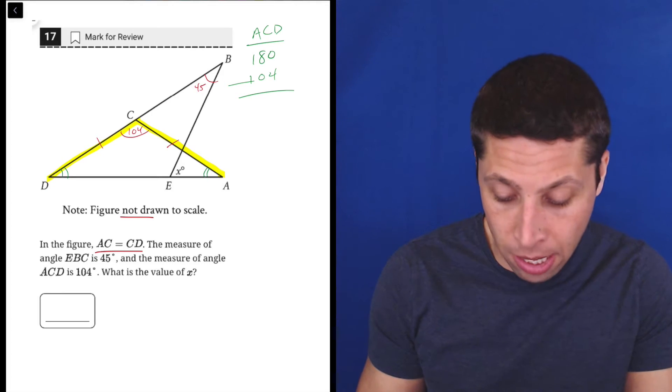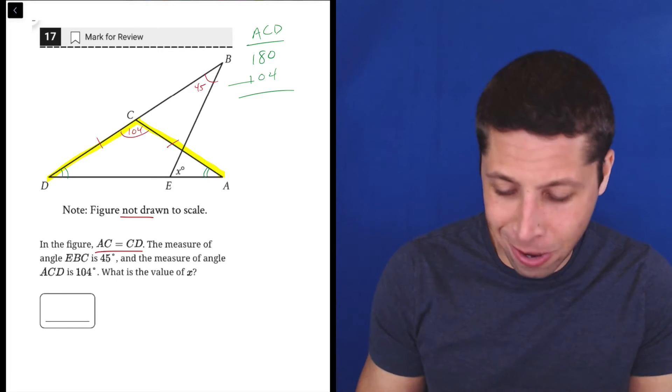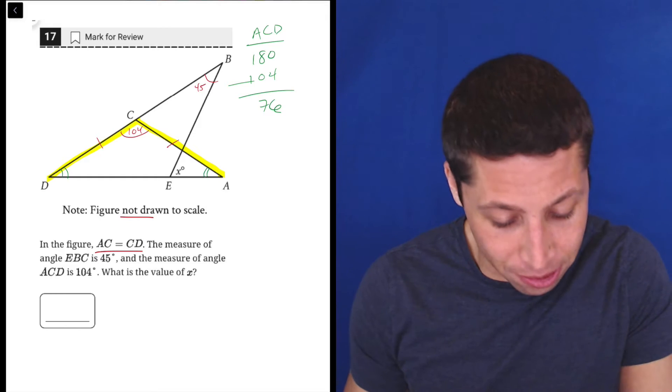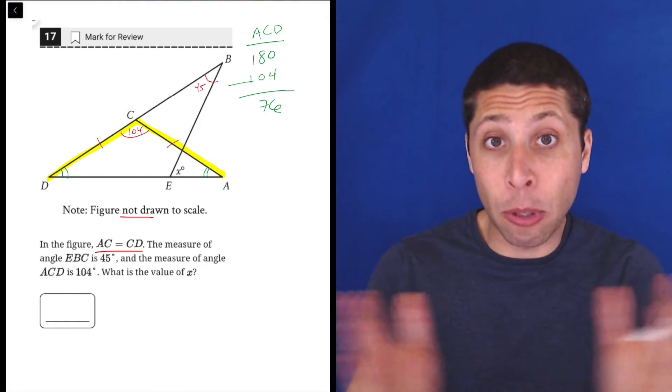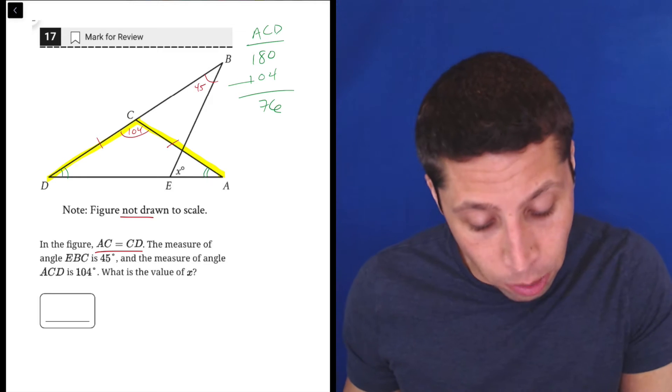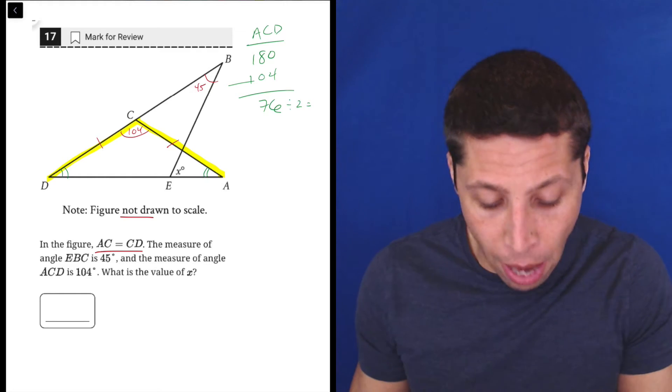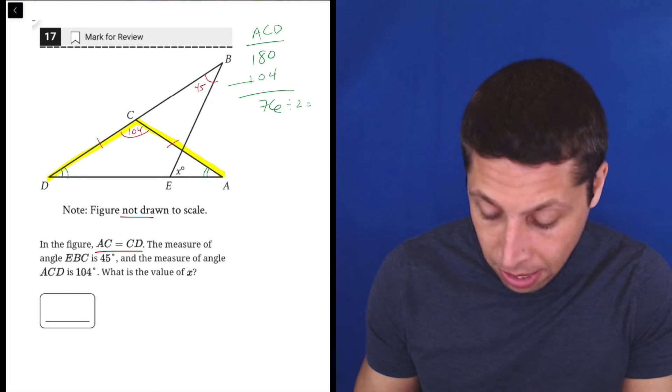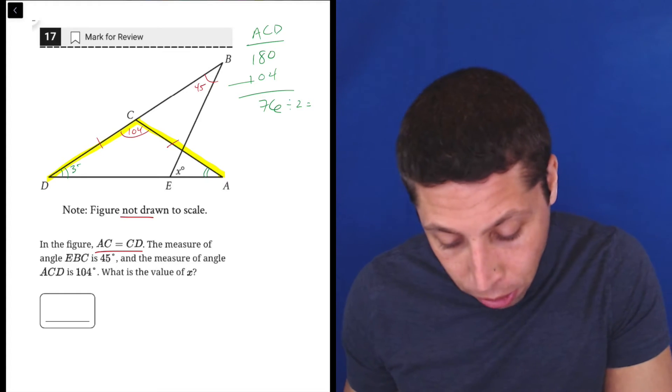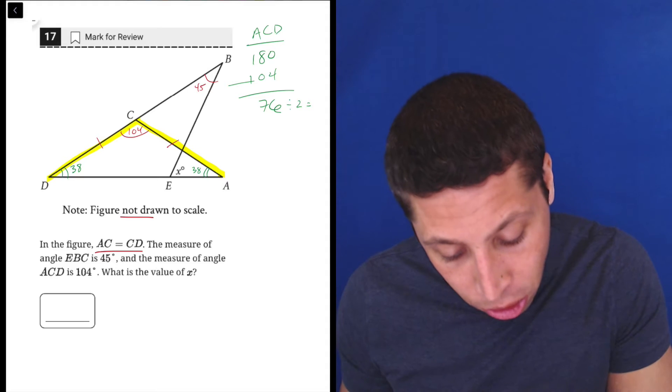So 180 minus 104 is 76. So that's 76 degrees, but that 76 is split evenly between the two base angles. So why don't we just divide that by two? And that's going to give us the amount for each kind of base angle. So 76 divided by two is 38. So these are each 38.